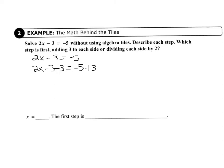So our negative 3 and our plus 3 cancel each other out. They become 0, and then we have 2x equals negative 5 plus 3, which equals negative 2.